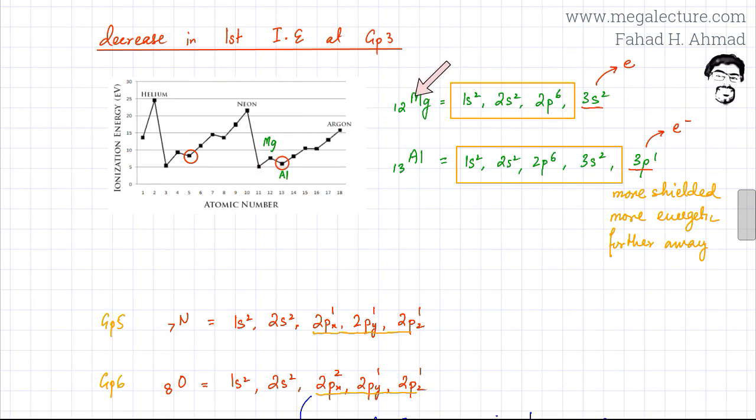Magnesium has 12 protons, aluminum has 13 protons. As you move across the period, the more protons there are, the stronger the electron is attracted and the more difficult it is to remove an electron. According to this, aluminum should have a higher ionization energy because it has more protons.